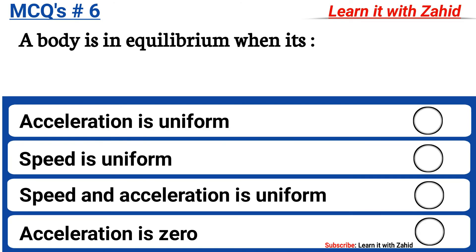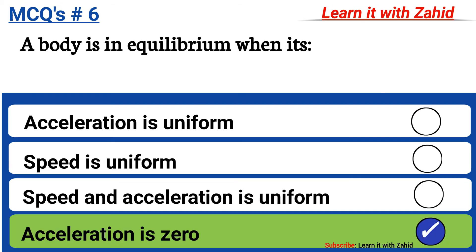A body is in equilibrium when its: option A acceleration is uniform, option B speed is uniform, option C speed and acceleration is uniform, option D acceleration is zero. The correct answer is option D, acceleration is zero.